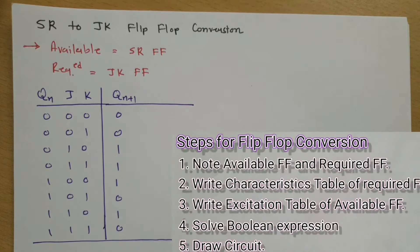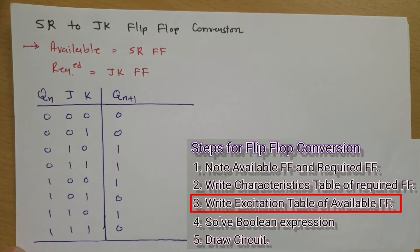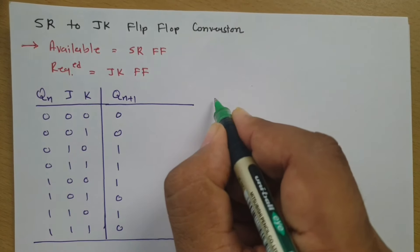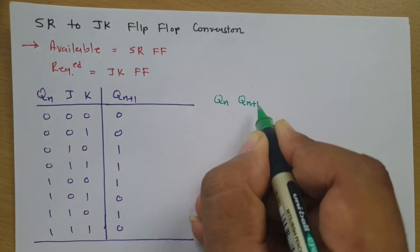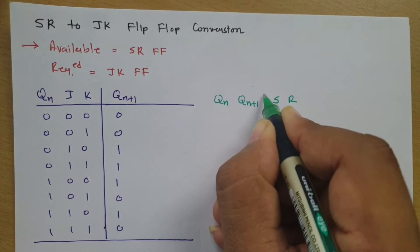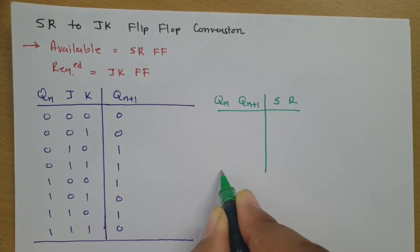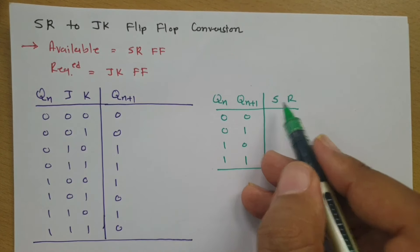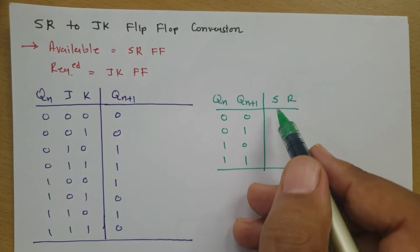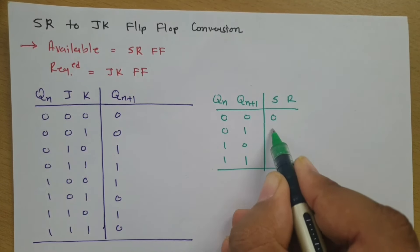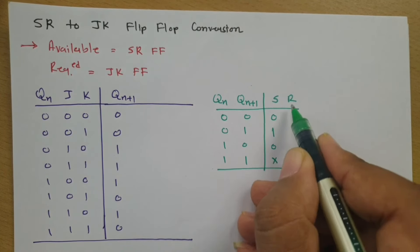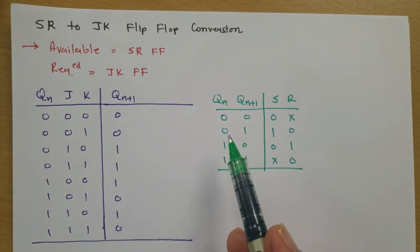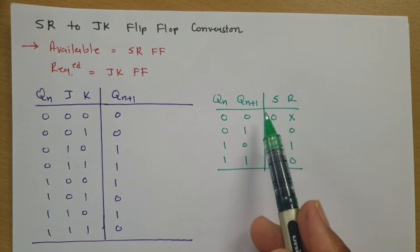The third step is to write the excitation table of the available flip-flop, which is the SR flip-flop. The excitation table shows the current state and next state with respect to inputs S and R. For this excitation table we have four combinations, and we need to remember it: for S it is 0, 1, 0, don't care; and for R it is don't care, 0, 1, 0. That is the excitation table for the SR flip-flop.